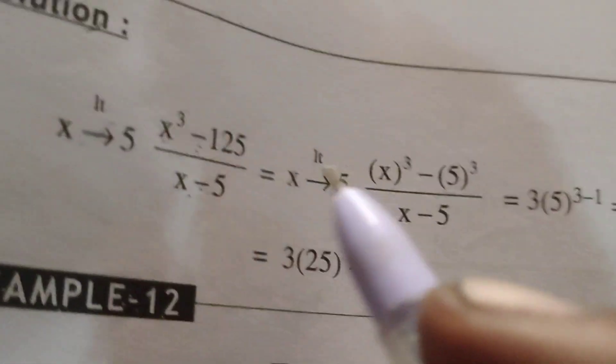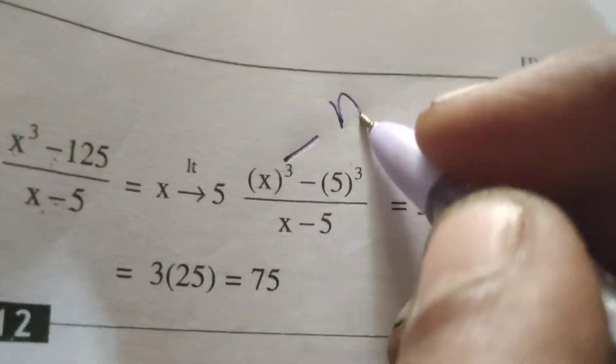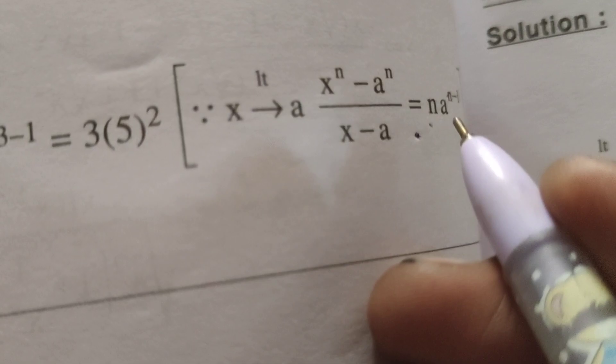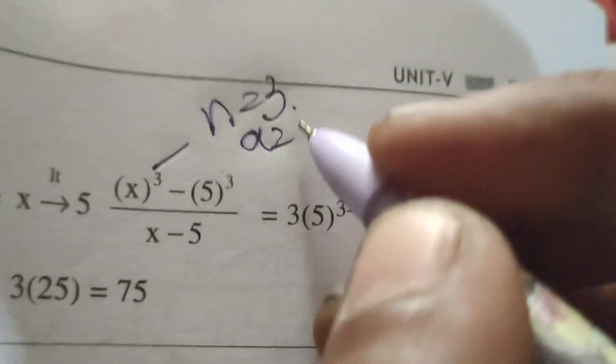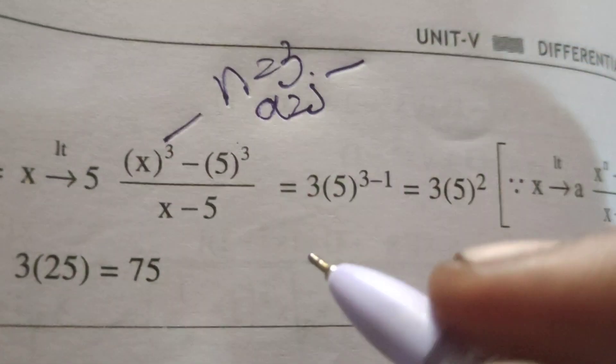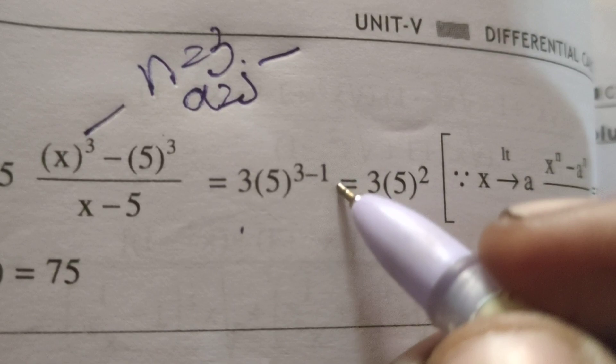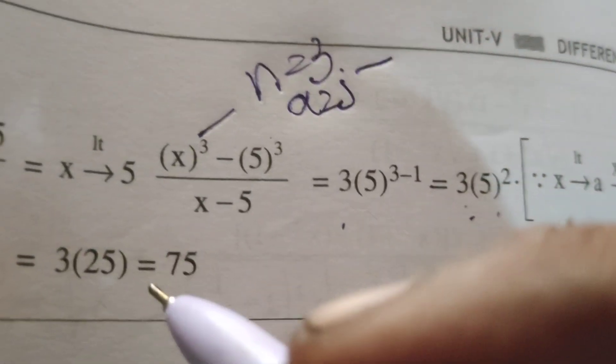Here n means 3, a means according to this formulae a means 5. Therefore n into 3 into a power n minus 1, 5 power 3 minus 1, 3 into 5 square, 3 into 25.